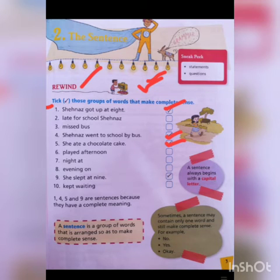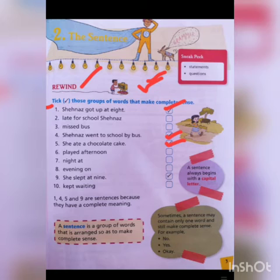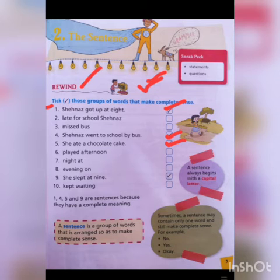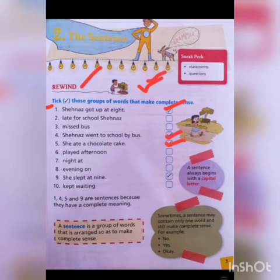The sixth one is: 'Plate afternoon' — does it have a meaning? A sense? No — it has no sense. The seventh one is: 'Night at' — night at what? It has also no sense. The eighth one is: 'Evening on' — evening on what? This is also not a complete sentence.